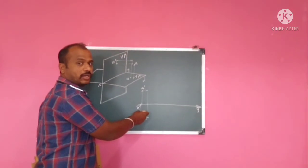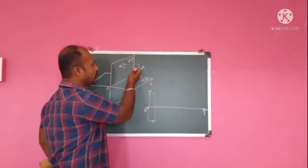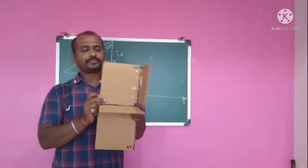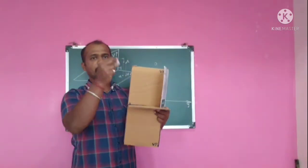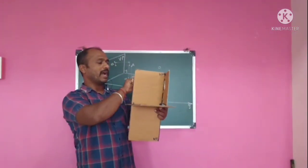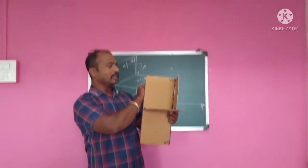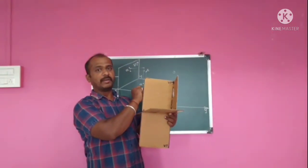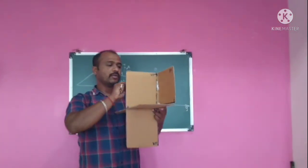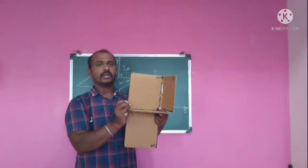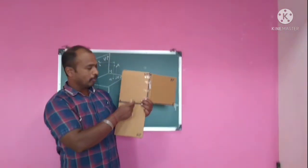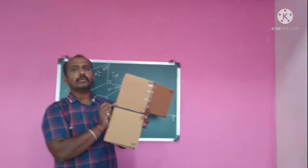In the first quadrant the point is above HP and in front of VP — the observer is always here. Now in the second quadrant, the point is behind VP and above HP. When we draw its front view and top view and then rotate, the front view and the top view get overlap above the XY line.